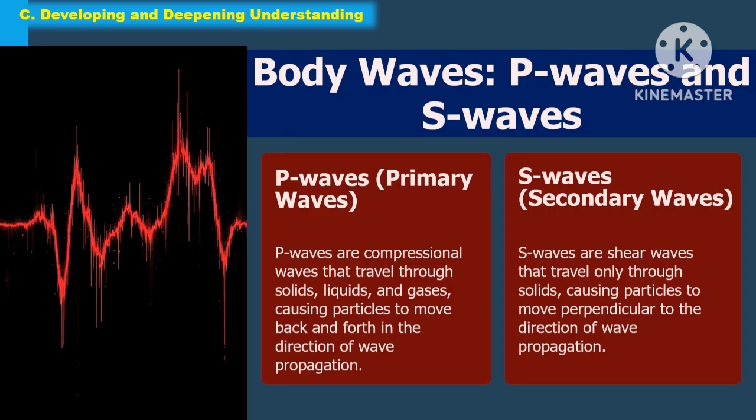The body waves include P waves and S waves. P waves, called primary waves, are compressional waves that travel through solids, liquids, and gases, causing particles to move back and forth in the direction of propagation. S waves, or secondary waves, are shear waves that travel only through solids, causing particles to move perpendicular to the direction of wave propagation.